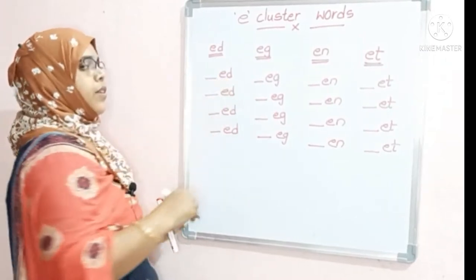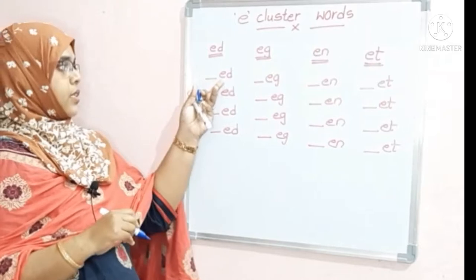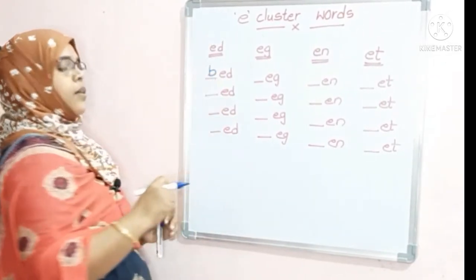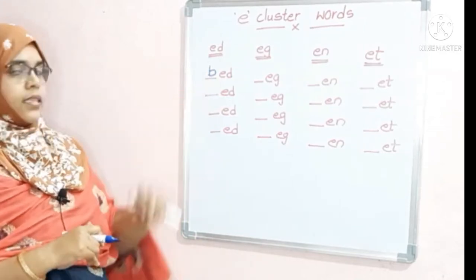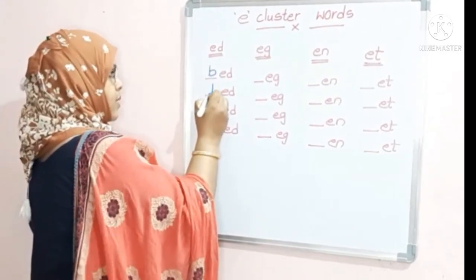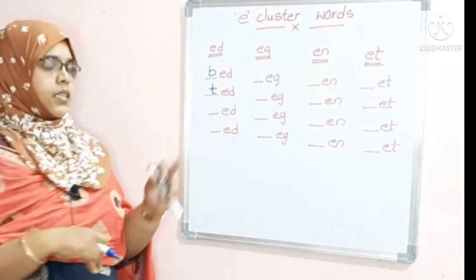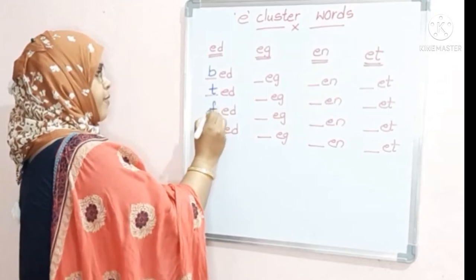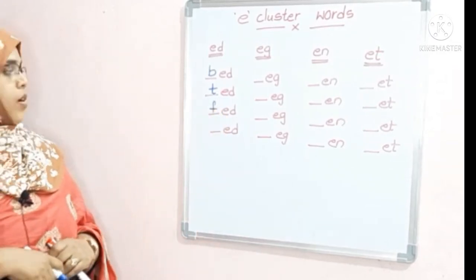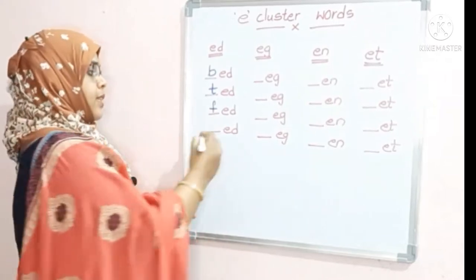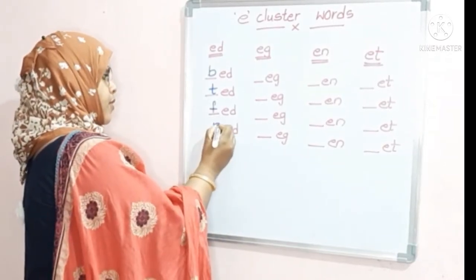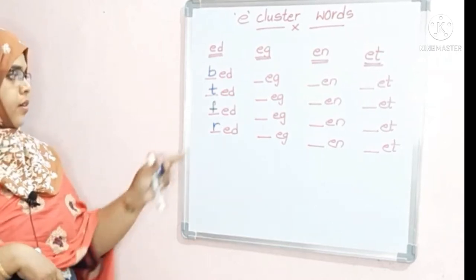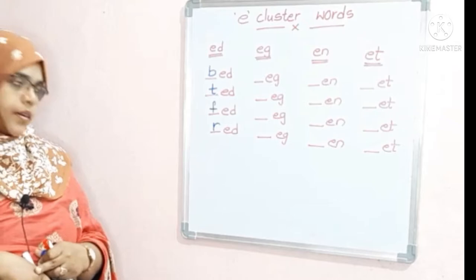Here we have the E-D-E cluster. If you are writing letter B here, B-E-D will be 'bed'. T-E-D will be 'ted'. If you are writing F, F-E-D will be 'fed'. If you are writing R — the sound of R is R — R-E-D will be 'red'.